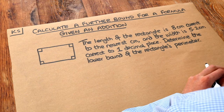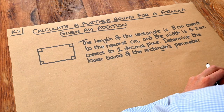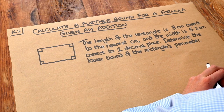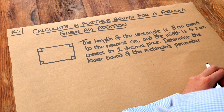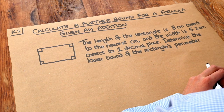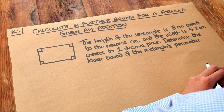Let's read the problem: the length of a rectangle is 8 centimetres correct to the nearest centimetre, and the width is 5.2 centimetres correct to one decimal place. Determine the lower bound of the rectangle's perimeter.